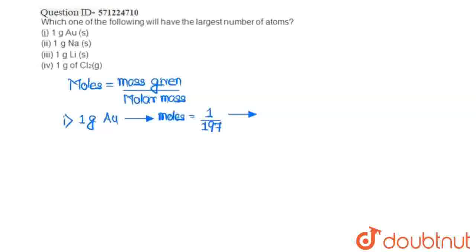This much will be the moles, and the number of atoms will be the moles multiplied by the Avogadro number. So, this much atoms of gold will be there.